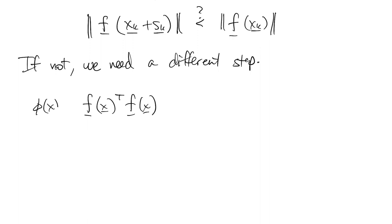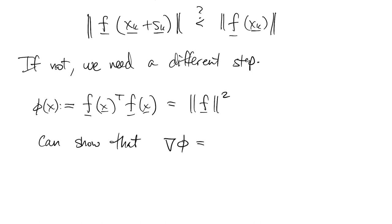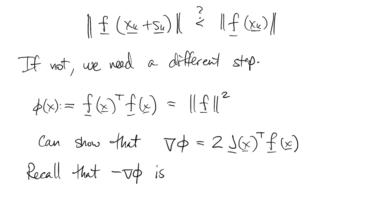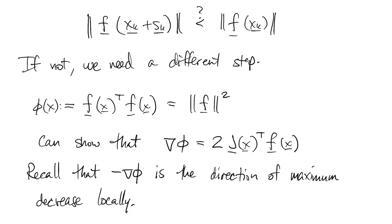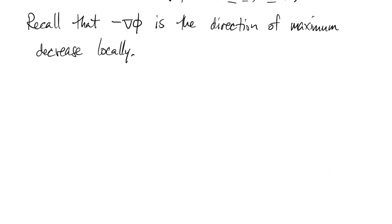We define the function phi as the inner product of f with itself — the norm of f squared — so phi is a scalar-valued function. Taking its gradient, we find it's proportional to the Jacobian transpose times f. From vector calculus, the negative gradient is the direction of most rapid decrease locally, so that's a good direction to go when nothing else is working. This technique is known as steepest descent or gradient descent, and it's very important in machine learning.